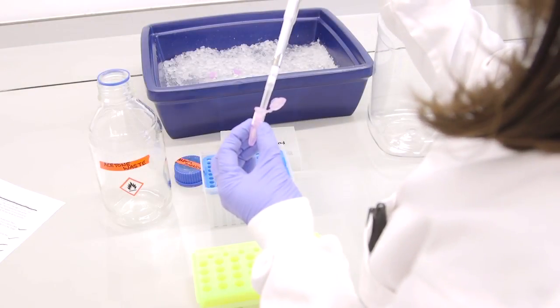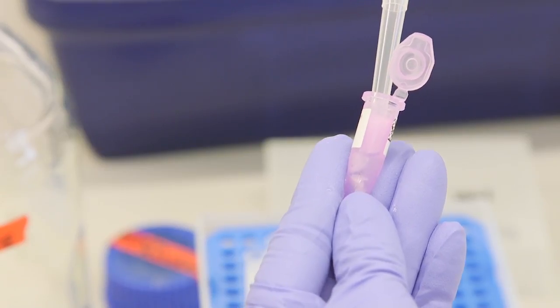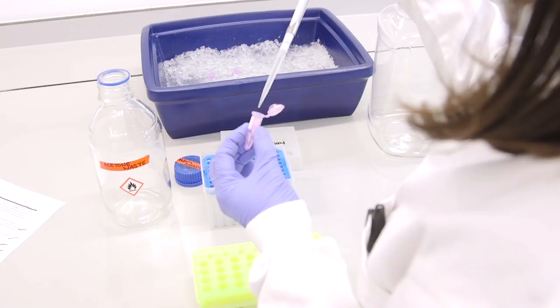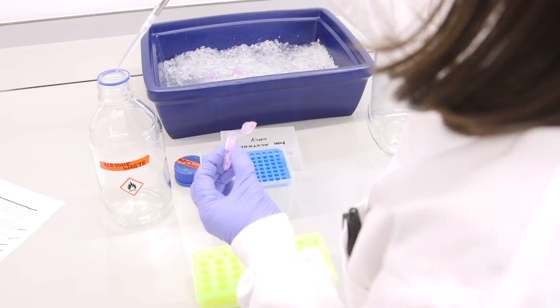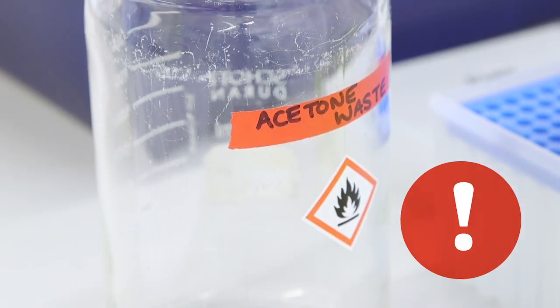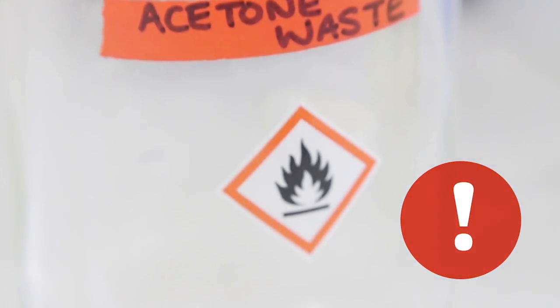Once the 20 minutes are up and whilst wearing safety glasses, remove the acetone from each tube using a filter tip. This should be placed into a designated waste container. Acetone waste should be kept in a flammables cabinet and disposed of according to local guidelines.